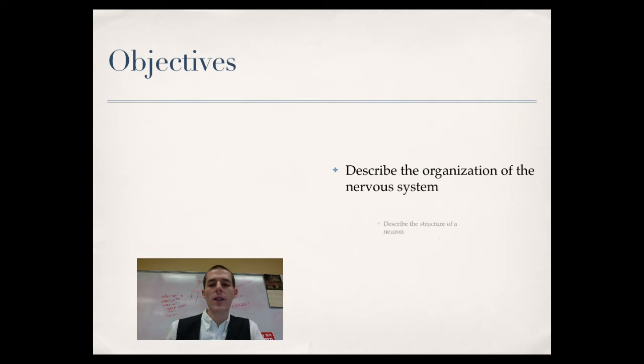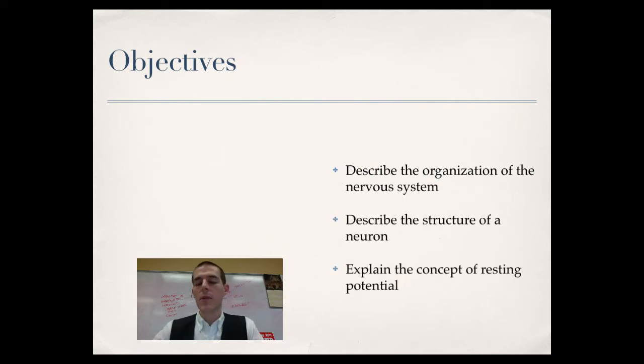So by the end of this video, here's stuff you need to know. First thing, describe the organization of the nervous system and then describe the structure of a neuron and finally explain the concept of resting potential.